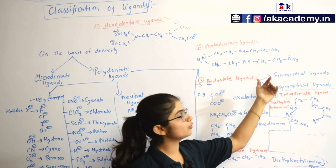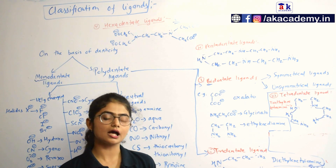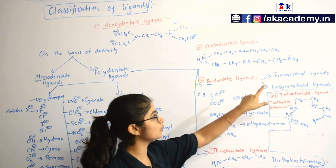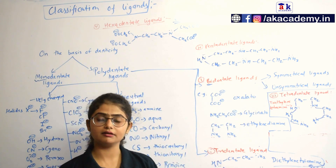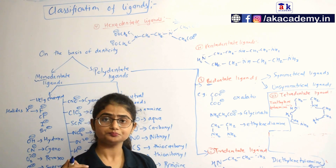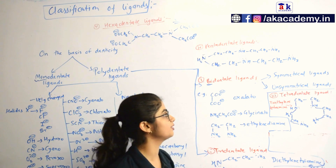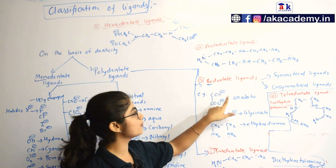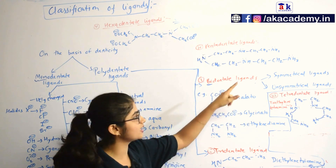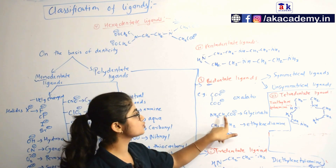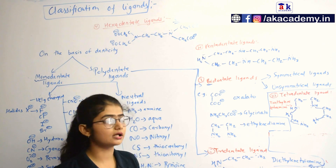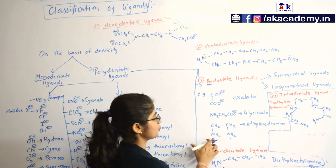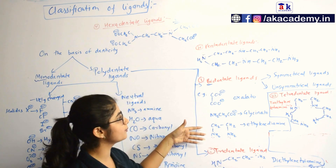A bidentate ligand can be symmetrical or unsymmetrical. Symmetrical ligands are those in which both donor atoms are the same. Unsymmetrical ligands are those in which the two donor atoms are different. For example, oxalato (C2O4 2−) has both donor atoms the same, so it is a symmetrical ligand. Then NH2CH2COO− is glycinato. The very famous ethylene diamine also has two points of attachment. That was about the bidentate ligand.